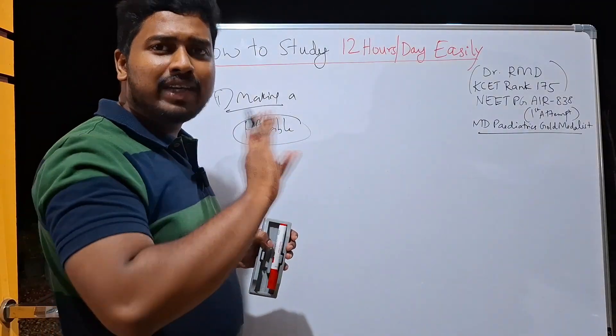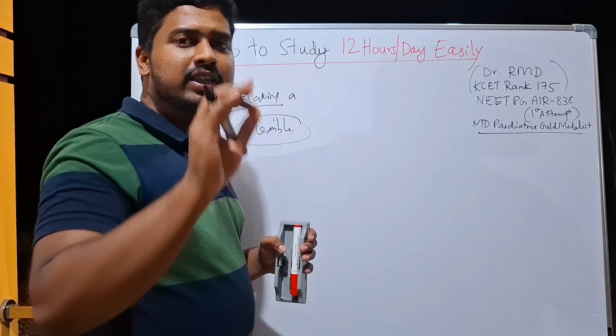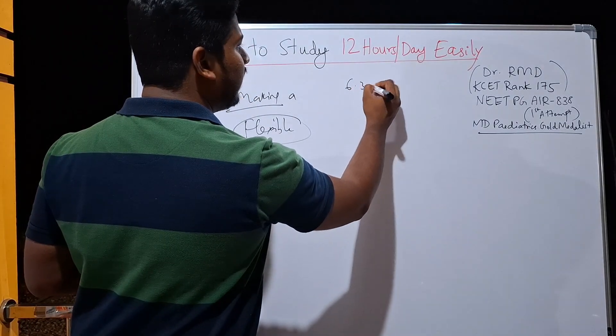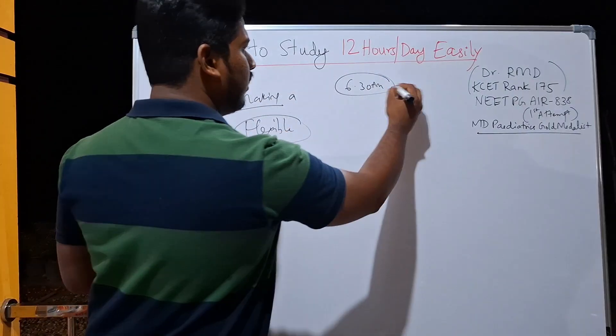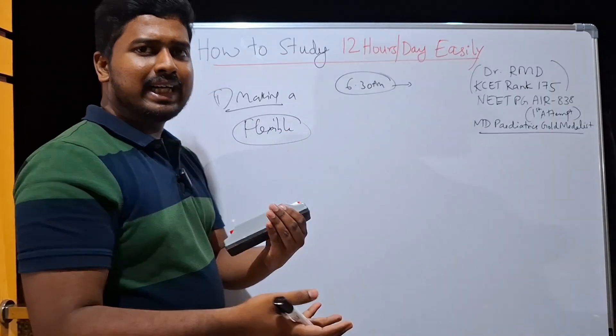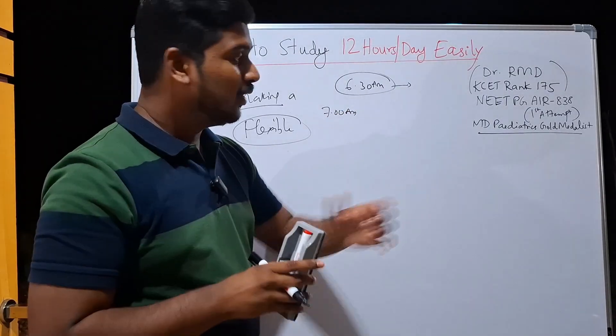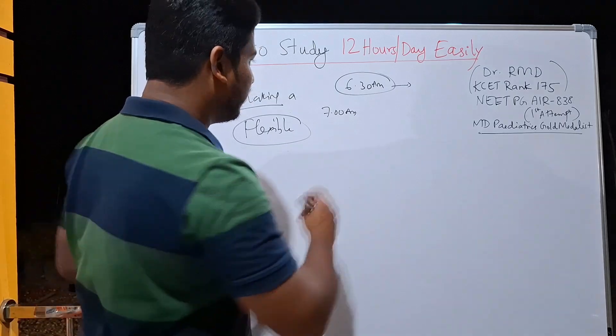So how do you make a flexible schedule? First thing, don't wake up at 5 a.m. in the morning. That is the first rule. Wake up at a time which you are comfortable with, which everyone is comfortable with, that is at around 6:30 a.m. So 6:30 a.m. is the time when your day should start. Take 30 minutes of routine activities. Start at 7 a.m. This is what I used to do during my MD Pediatrics exam which gave me gold medal. I was university topper.